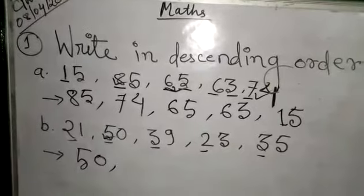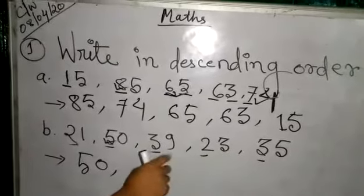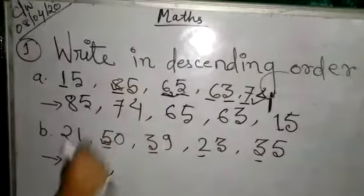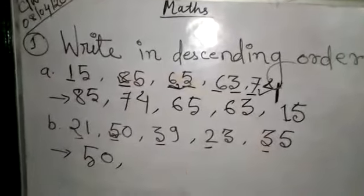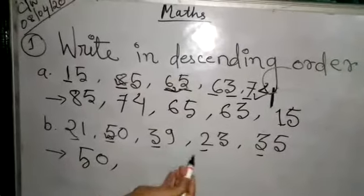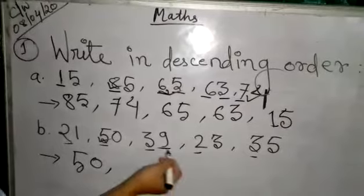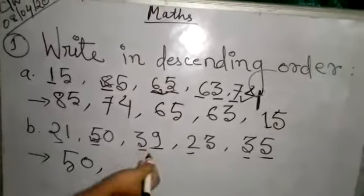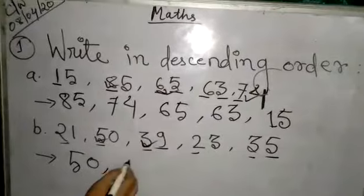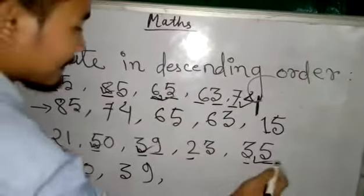So, which is greater? Of course, 3 is greater. But we have two numbers starting with 3. Here it is also 3. Here it is also 3. So, as per the rules, we will go to the second digit. Here it is 9 and here it is 5. So, which is greater? 9 or 5? Of course, it is 9. So, we will write 39 first, then followed by 35.